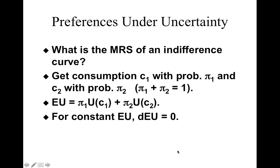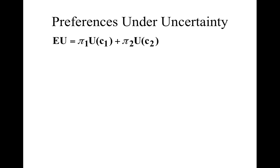One thing that we know is that if utility is constant — so on an indifference curve — I can change the combination of C1 and C2 and there would be no change in utility. So if D is change in utility, on a single indifference curve, if I move up and down, the change in utility is 0. We are going to use this fact to figure out what's the slope of the indifference curve.